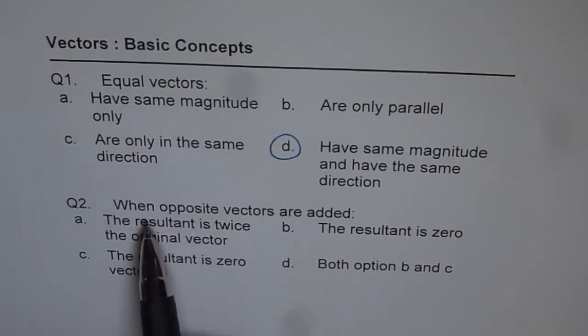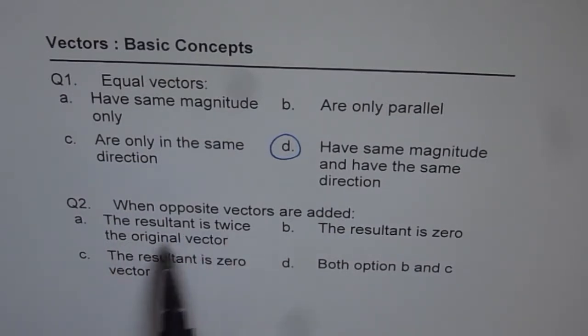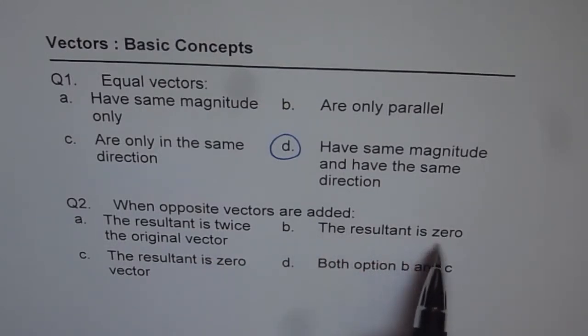Question number 2 is: when opposite vectors are added, what do you get? You get a 0 vector, right? Let us look into the choices. The resultant is twice the original vector. That is wrong. The resultant is 0.